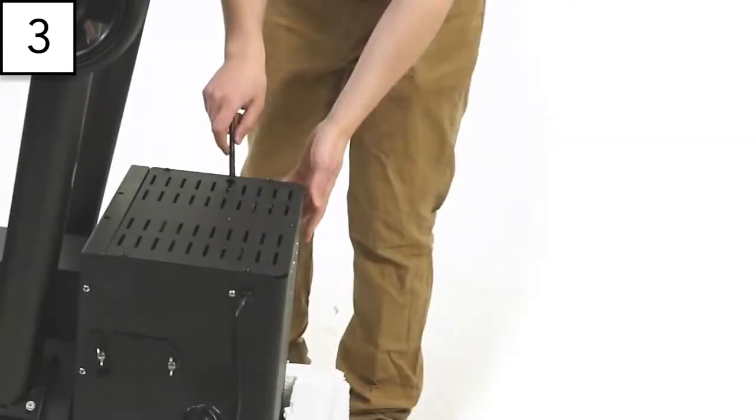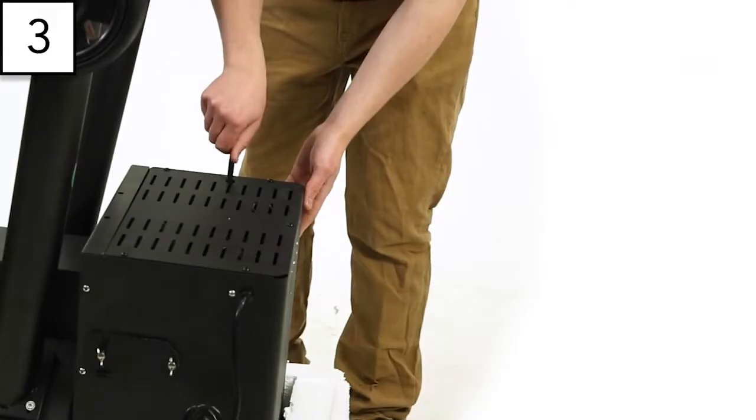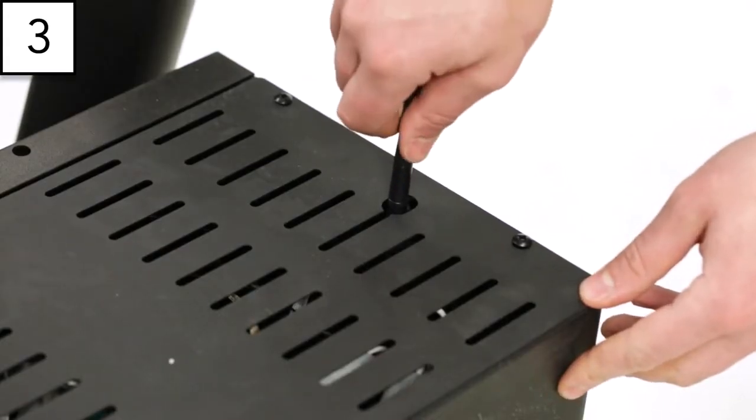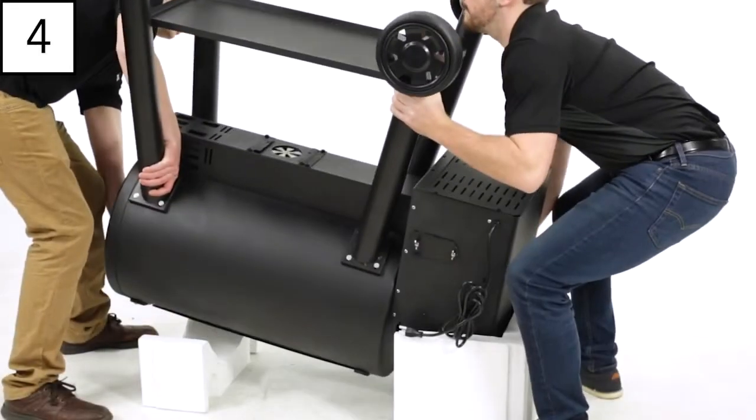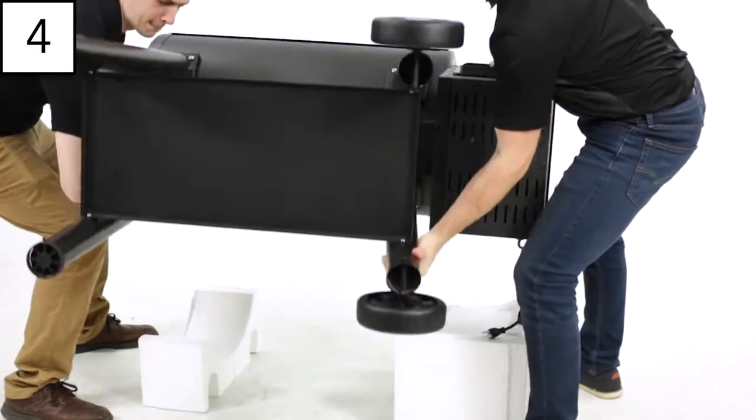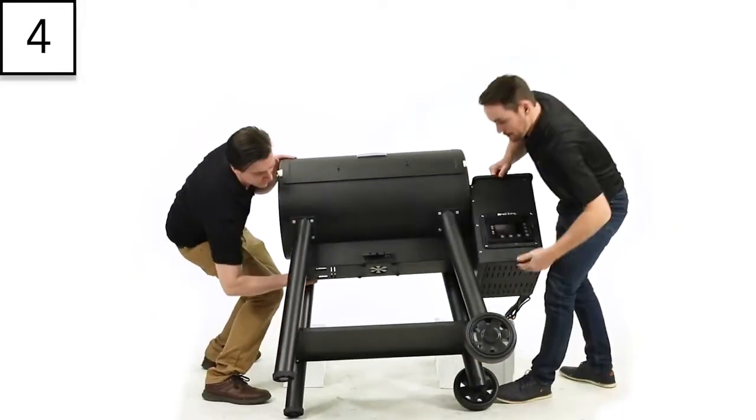Step 3. Install the Wi-Fi antenna to the bottom of the hopper. Turn to face towards the back of the hopper and lay flat. Step 4. With the help of another person, turn the pellet grill right side up onto its legs and wheels.